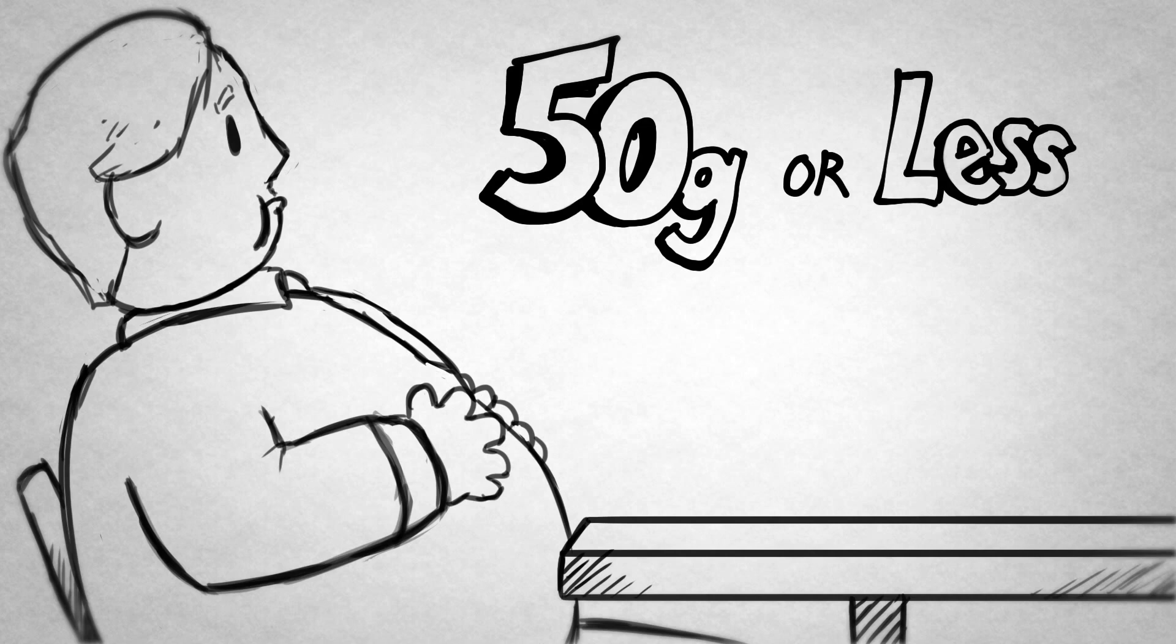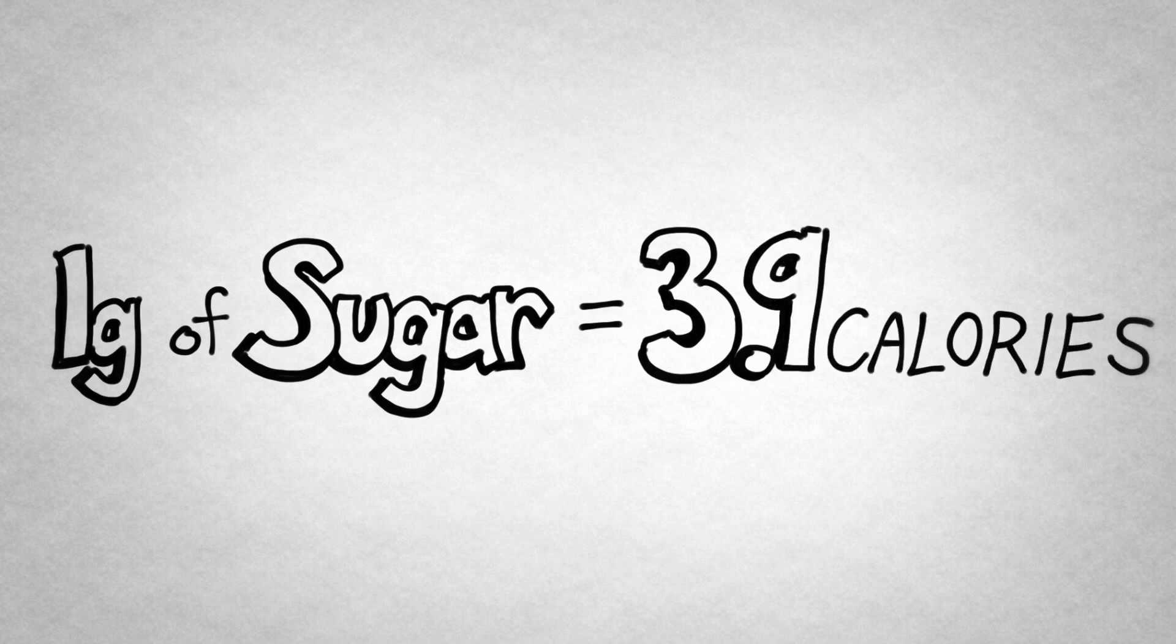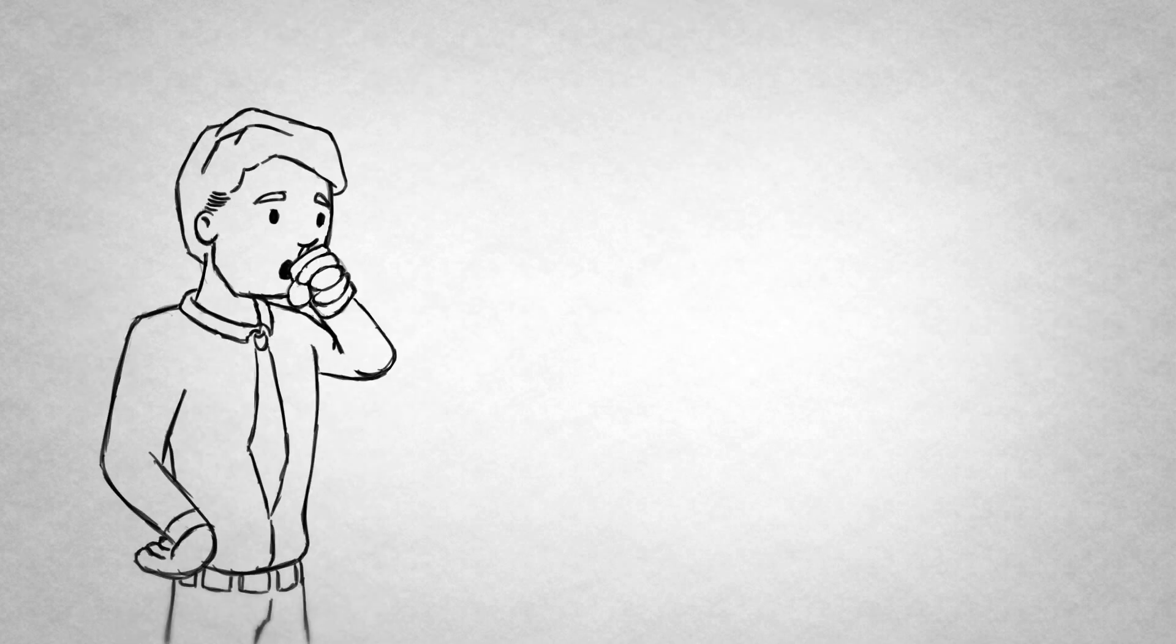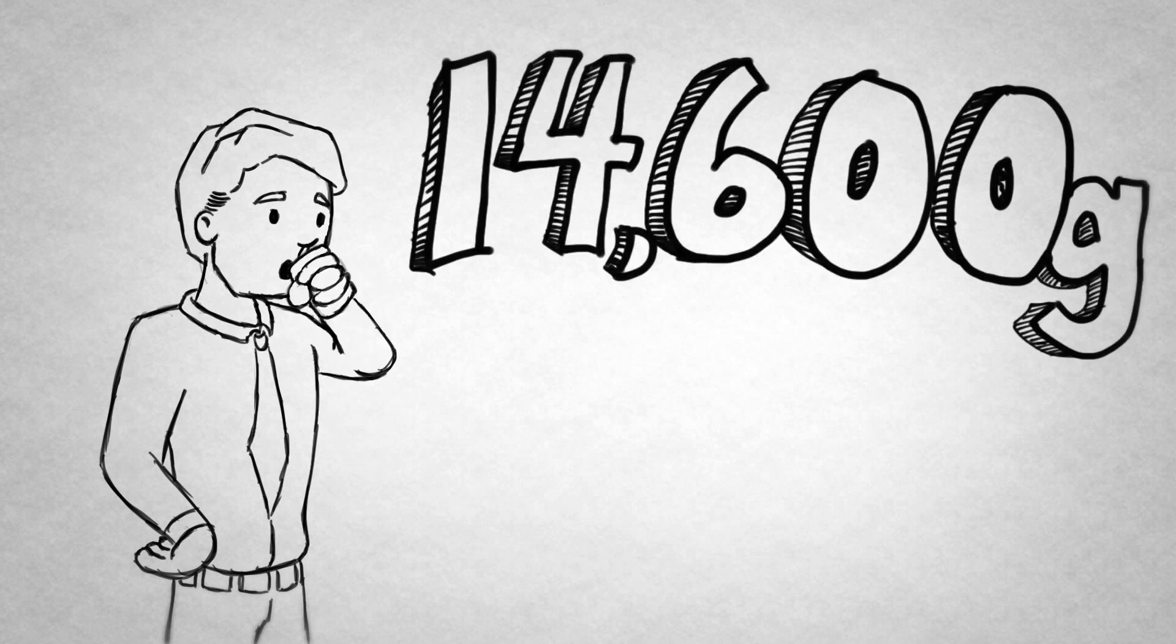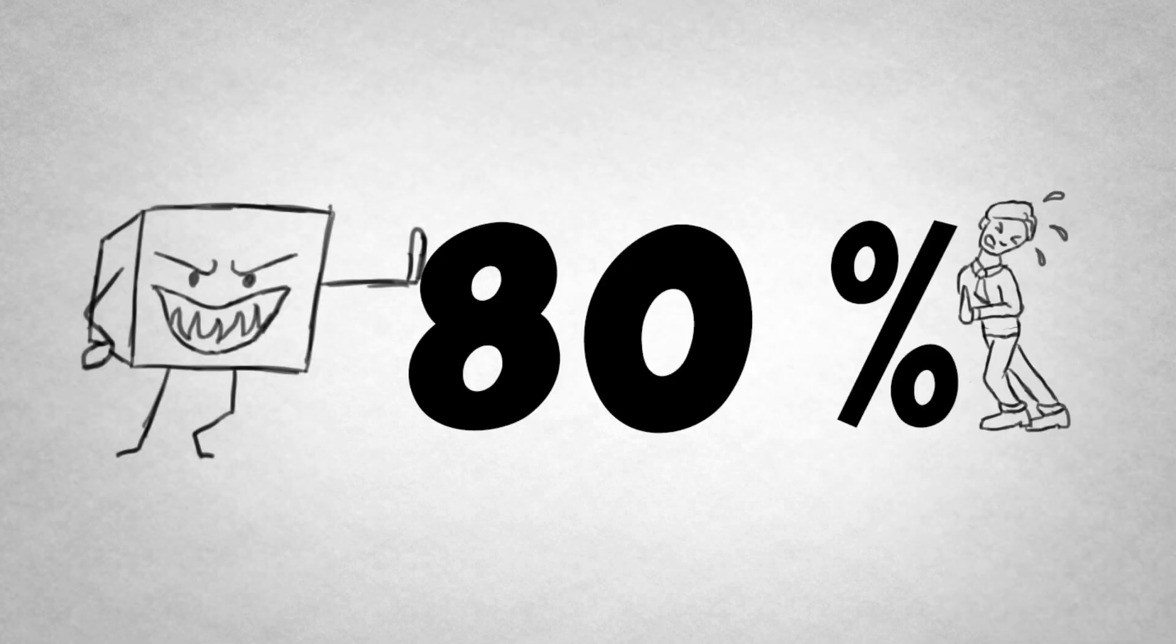Why? Sugar is incredibly calorie dense. A single gram of sugar has 3.9 calories. Let's say you drink a small Coke for lunch every day. That adds up to 14,600 grams of sugar per year, just from your drink at lunch. By the way, 14,600 grams is 80% of what you need in a year.